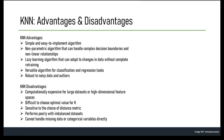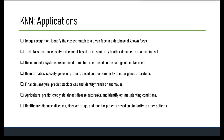The disadvantages of KNN are: it can be computationally expensive especially with large datasets or high-dimensional feature spaces, because it must calculate distances between the test instance and all training instances. Choosing the optimal K is difficult — a low K leads to overfitting and a high K leads to underfitting. KNN is sensitive to the choice of distance metric. It performs poorly with imbalanced datasets, and cannot handle missing data or categorical variables directly, requiring pre-processing and feature engineering.